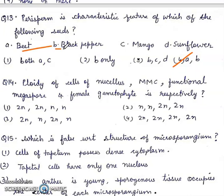Question 14. Ploidy of cells of nucellus, MMC, functional megaspore, and female gametophyte is respectively: 2n, 2n, n, n. Right answer will be 1st.